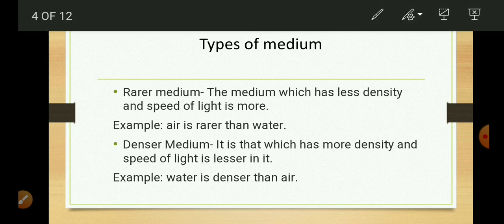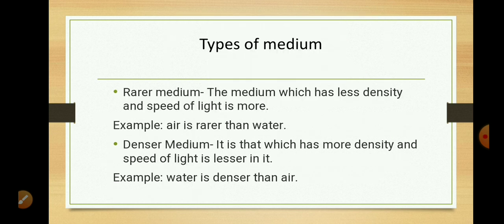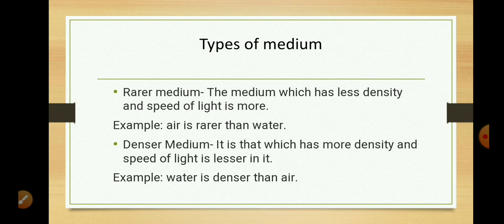For example, air is the rare medium and water is the denser medium. A denser medium is one which has more optical density and the speed of light is lesser in it. Water is denser than air, meaning water has more ability to slow down the transmission of light than air. As another example, if we take water and oil, the optical density of water is less than that of oil, so oil is the denser medium and water is the rarer medium relative to oil.